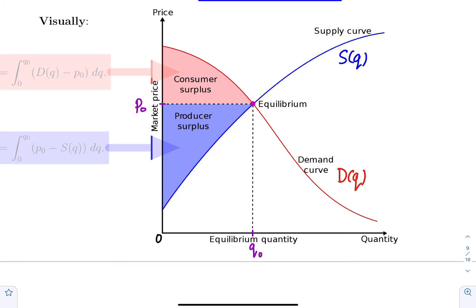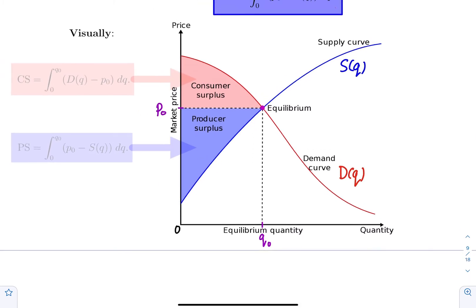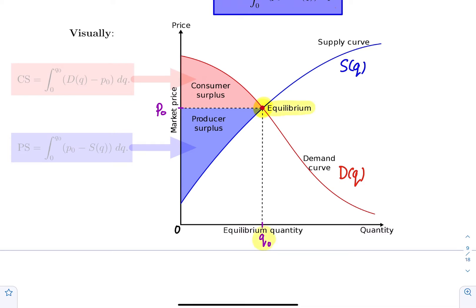The point that we will label (Q0, P0), where the demand curve and the supply curve meet, is called the equilibrium point, with Q0 being called the equilibrium demand and P0 being called the equilibrium price.